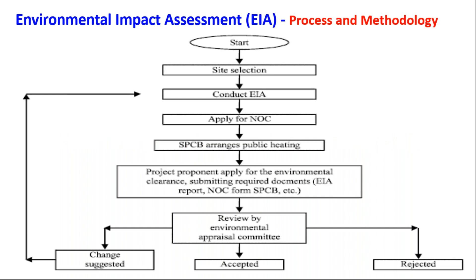From this flowchart you can understand what exactly the EIA process and methodology is. This Environmental Impact Assessment process starts with site selection — the initial stage for any new or existing project involves identifying the site.